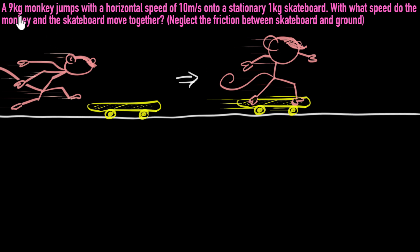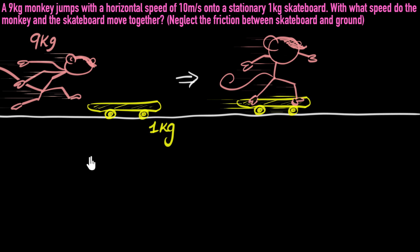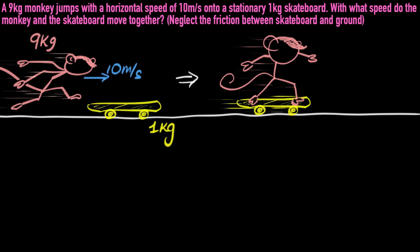What data is given to us? We know the mass of that monkey is 9 kg, and we also know the mass of that skateboard is 1 kg. I'm just writing it on this picture. We are also given that the monkey jumps with a horizontal speed of 10 meters per second, so this monkey has a speed of 10 meters per second. And the skateboard is stationary, so the skateboard initially is at rest.